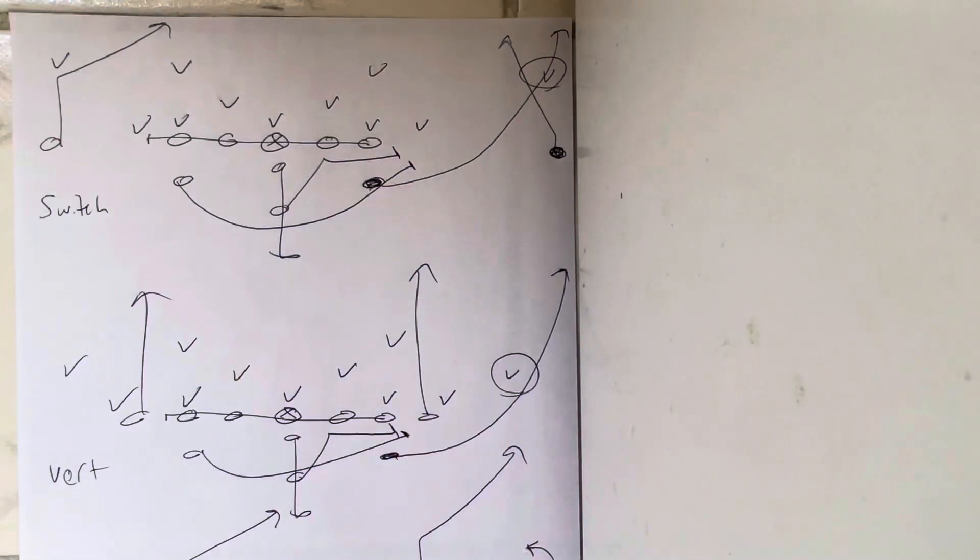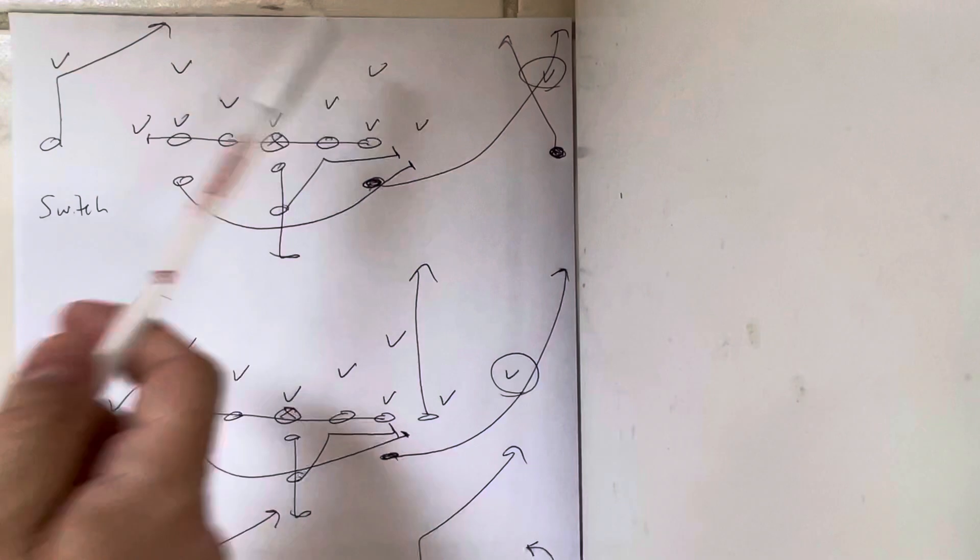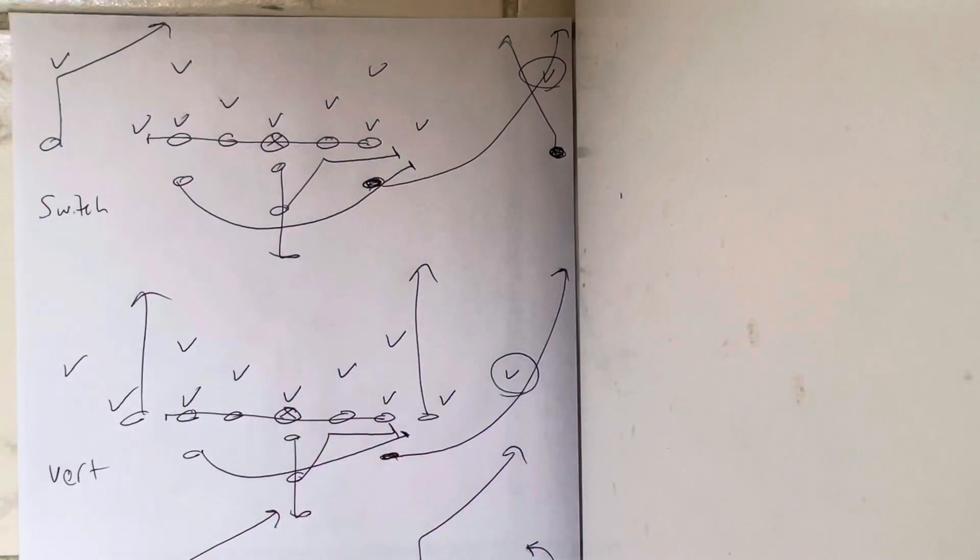Dr. Salah here. Anytime you get a two-high safety defense or any defense that involves a play-side safety, one of the things Paul Johnson always did and now his disciples are doing to this day is they don't attack the safety—they attack the corner, because the corner is now in a very vulnerable position when there's a play-side safety.